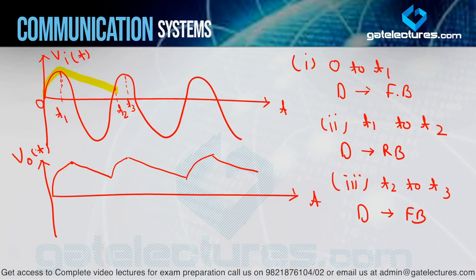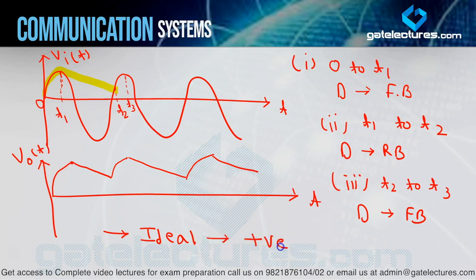Here is one important point: the input was a pure sinusoidal waveform showing both positive and negative sides, but in the output, only the positive side is shown — the negative side does not appear. This means the envelope detector provides only the positive envelope. In the ideal case, we take this as a complete positive envelope. So this is the meaning of envelope detector.